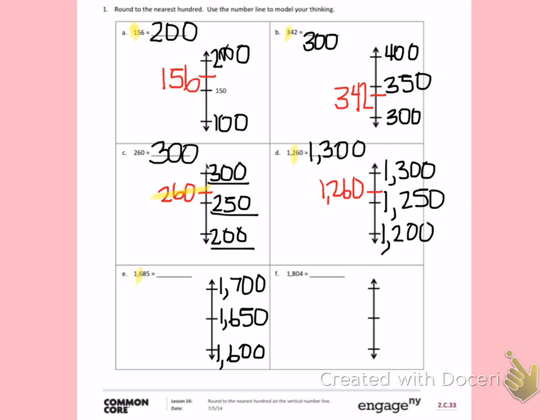1,685 would be about here on the number line. When I look at my number line, I see 1,685 is past the halfway number, so I will round up to the next hundred, which is 1,700.